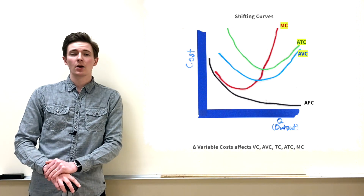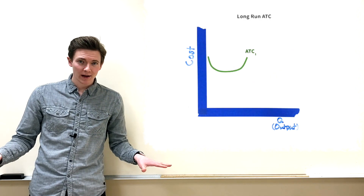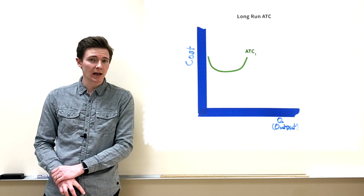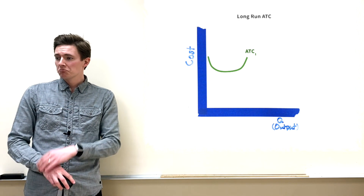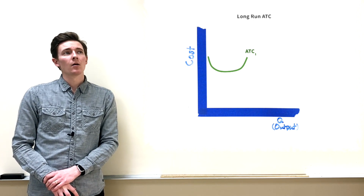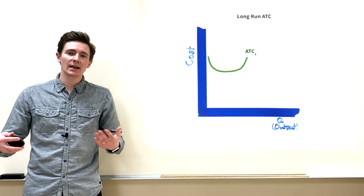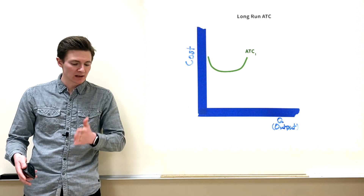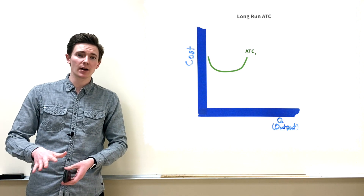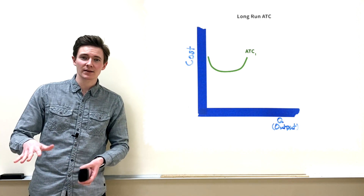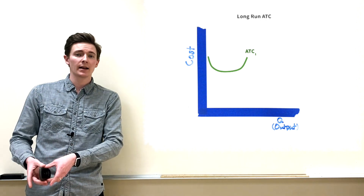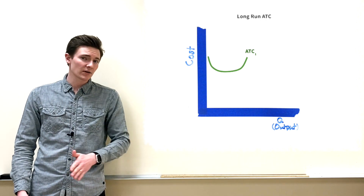Lastly, we have short-run average total cost — which is the standard ATC we've been discussing — and long-run average total cost. In the short run, we experience diminishing marginal returns because we crowd out our space. But in the long run there are no fixed costs — there's no fixed input like space or factory size because you can adjust those.